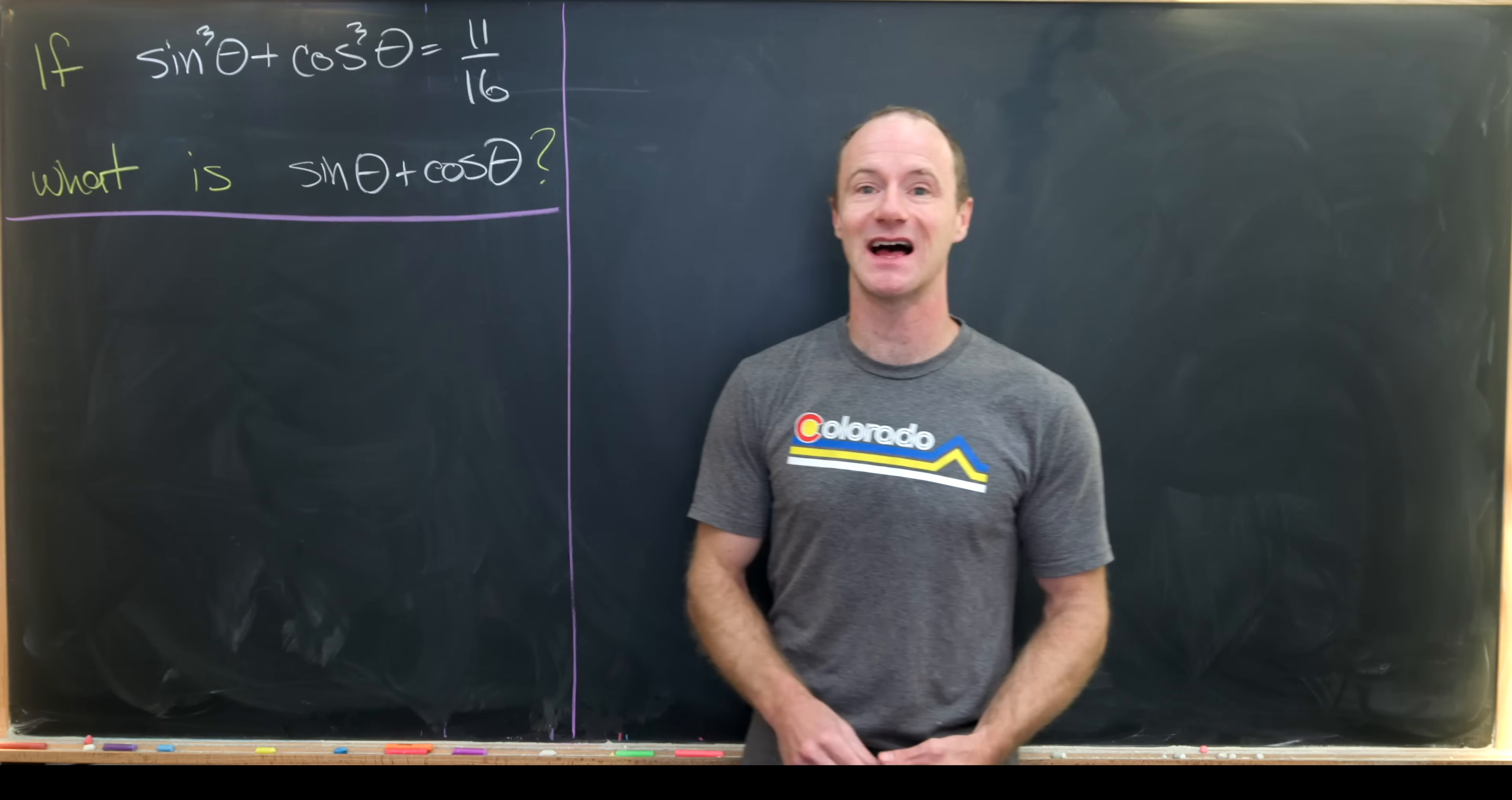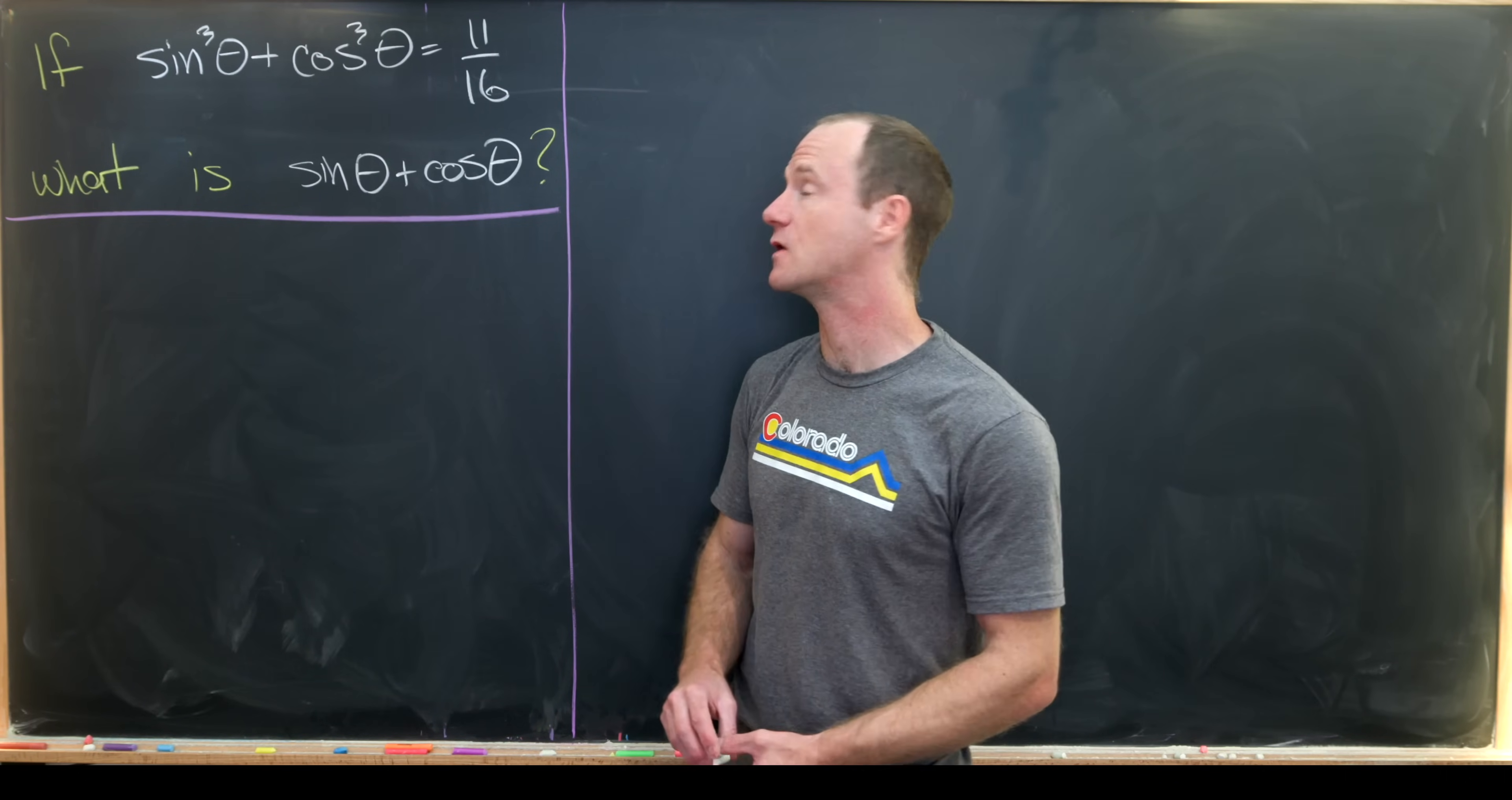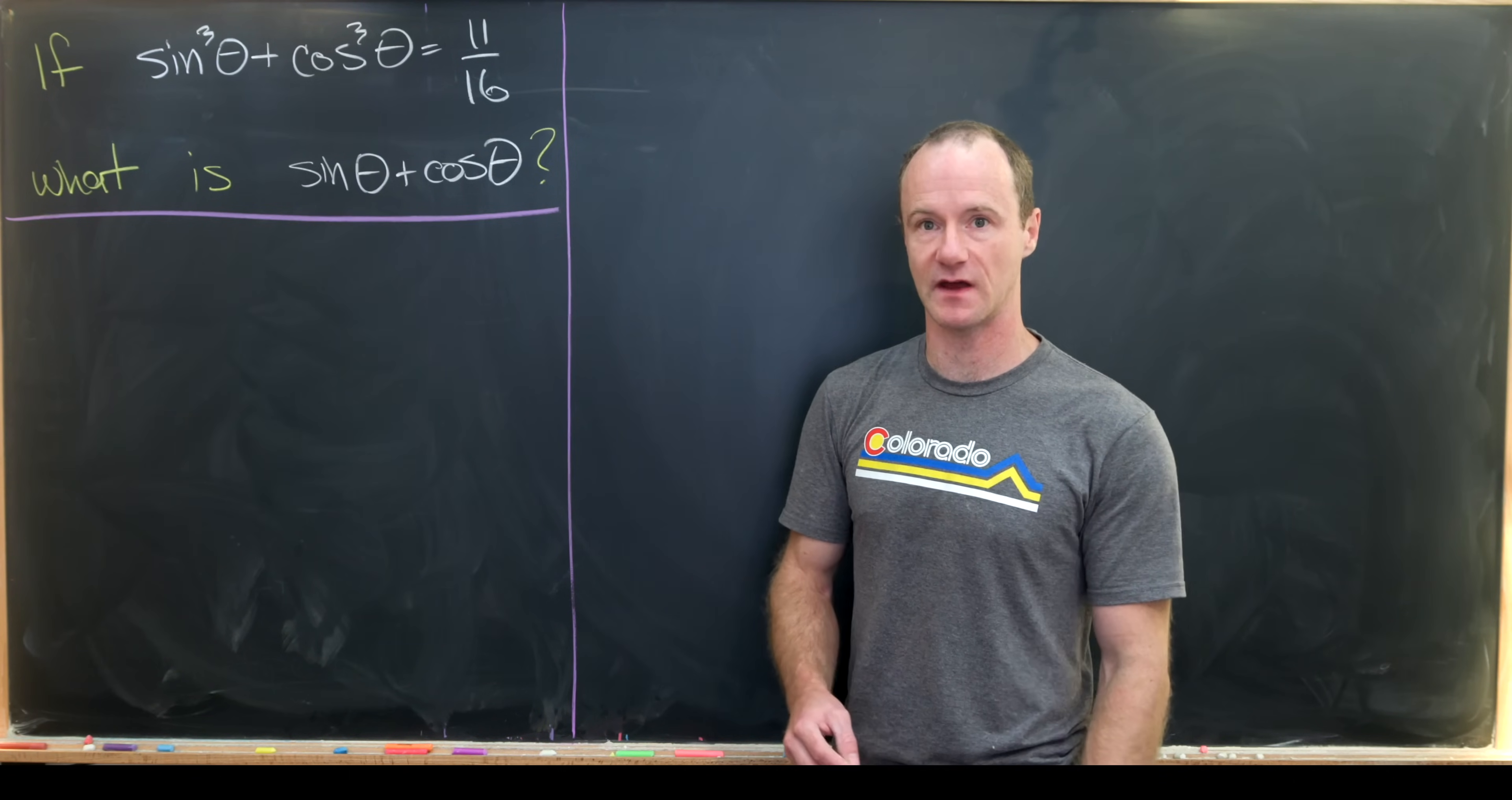We want to suppose that sine cubed theta plus cosine cubed theta equals 11 over 16, and use that to determine what is sine theta plus cosine theta.